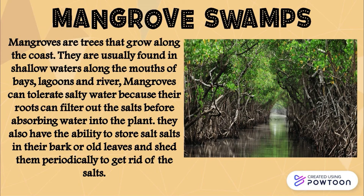Mangroves are trees that grow along the coast. They are usually found in shallow waters along the mouths of bays, lagoons, and rivers. Mangroves can tolerate salty water because the roots can filter out the salts before absorbing water into the plant. They also have the ability to store salts in their bark or old leaves and shed them periodically to get rid of the salts.